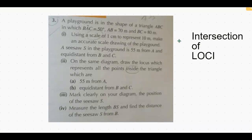In this video we are going to discuss intersection of loci. A playground is in the shape of a triangle ABC in which angle A is 50 degrees. Line AB has 70 meter length and line BC is 80 meter. Using a scale of 1 centimeter to represent 10 meters, make an accurate scale drawing of the playground.